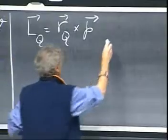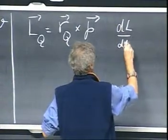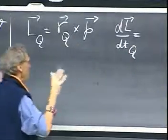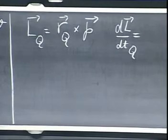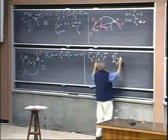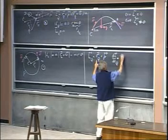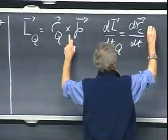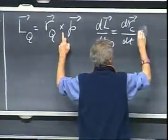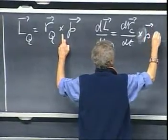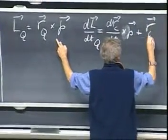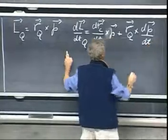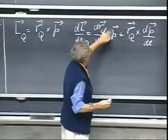I take the derivative, time derivative, dL dt relative to that point Q. It's always important that you state which point you've chosen relative to which you take the angular momentum. That is going to be dR dt cross P plus R of Q cross dP dt. This is the way that you take the time derivative of a cross product.